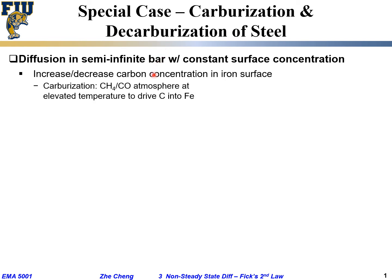Typically to do carburization, you put the steel into an atmosphere that contains methane or carbon monoxide. This gas contains carbon, and at high temperature those carbon atoms have a tendency to diffuse into your steel pieces. You drive carbon into the steel quite often at the surface to make the surface harder and more wear resistant.